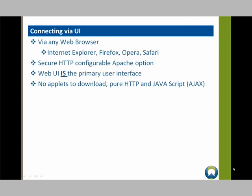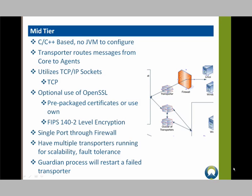Every single task is performed via a web browser, supporting leading web browsers such as Microsoft Internet Explorer, Firefox, and other leading browsers. The mid-tier allows Automation Center to scale to very large networks of agents.